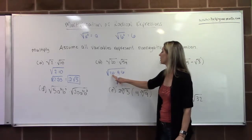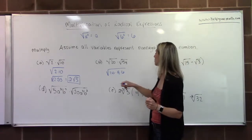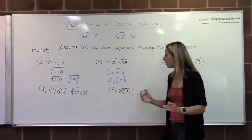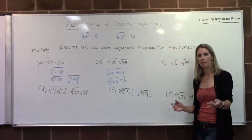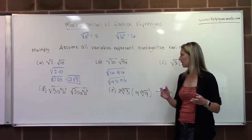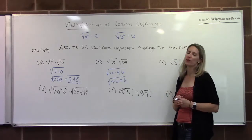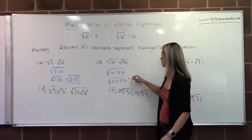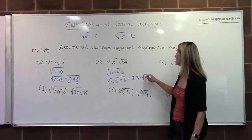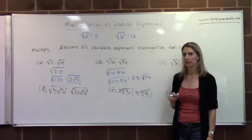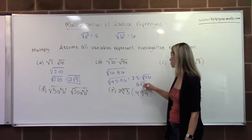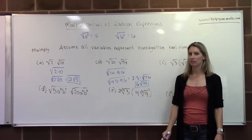Now I focus on the 20 and the 6. Wait — 20 also has a perfect square factor of 4. So I write everything as 4 times 5 times 9 times 6. The 4 and 9 are perfect squares that will pop out of the radical. The 5 and 6 don't have common factors besides 1 since 5 is prime. So I take the square root of 4, which is 2, and the square root of 9, which is 3, and leave 5 and 6 under the radical. Cleaning up: the coefficient is 2 times 3 equals 6, and under the radical is 5 times 6 equals 30. The answer is 6 radical 30.